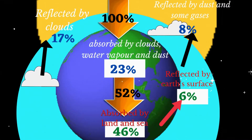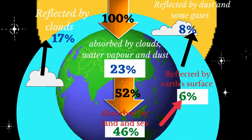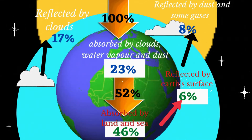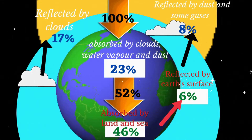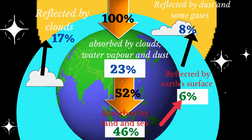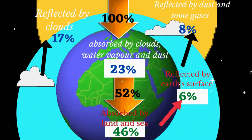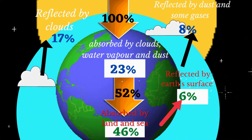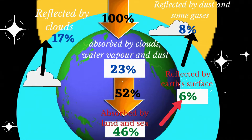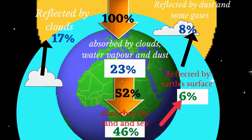Clouds and dust also reflect radiation, sending it back in the direction from which it is coming. Scattering occurs when some of the radiation is diverted by molecules of gases in the atmosphere.